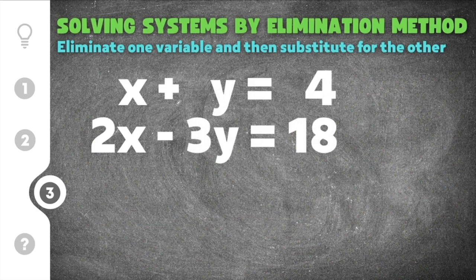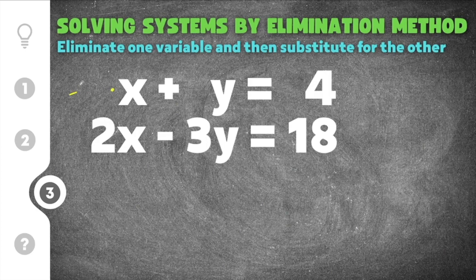Our last practice problem gives us the system x plus y equals 4 and 2x minus 3y equals 18. Again, we're going to multiply an equation so that when you add, a variable will cancel. In this system, you can get rid of the x variable or the y variable. If you want to eliminate x, multiply by negative 2 to get negative 2x so the x's cancel. If you want to eliminate y, multiply by positive 3 so you get positive 3y and negative 3y to cancel.